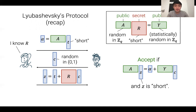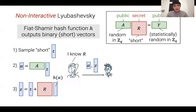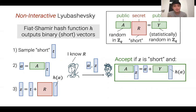In the Fiat-Shamir version, the prover applies the hash function H to alpha and uses H(alpha) in place of C. So in the non-interactive Lubaczewski protocol, the prover sends only alpha and Z, since the verifier can compute H(alpha) itself. The verifier accepts under the same condition: Z is short and A·Z = alpha + Y·H(alpha).